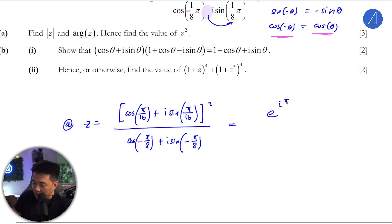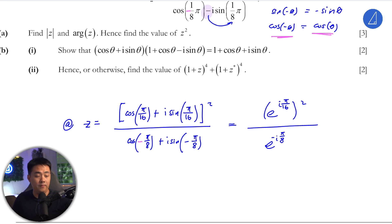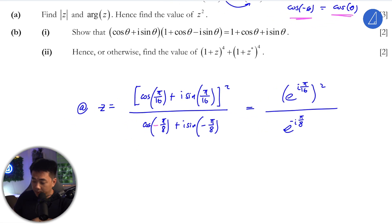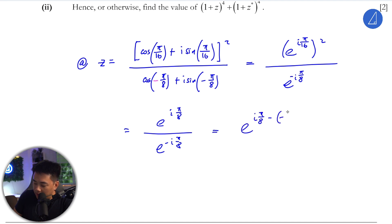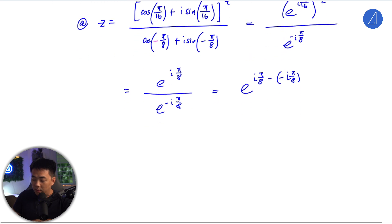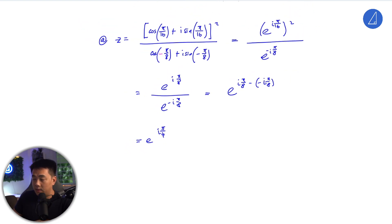Now we use the Euler identity. That gives us e^(iπ/16)² times e^(−iπ/8). The squared index form simplifies: e^(iπ/8) times e^(−iπ/8). Adding both exponents together gives a grand total of e^(iπ/4).